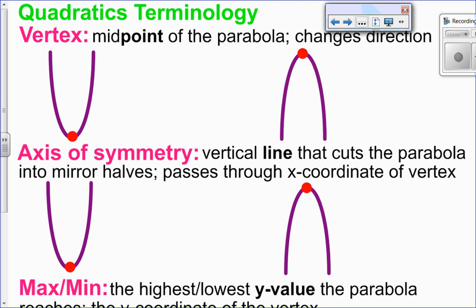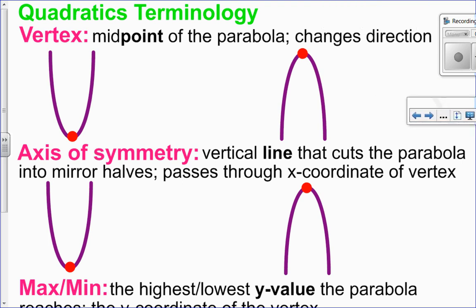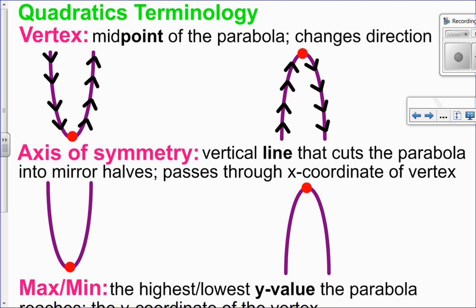Let's look at some important terminology before we jump into how to change things up. The first important word for quadratics is the vertex — this is the most important point on a quadratic. It's the midpoint, the point where the parabola changes direction. Look at this first parabola: it goes down, down, down, gets to that red point — the vertex — then turns around and goes up. This other parabola goes up, up, up, gets to the vertex, turns around, and goes down. So the vertex has coordinates (x, y) and is the point where the parabola changes direction.